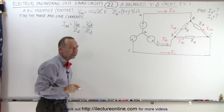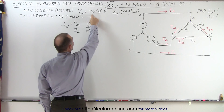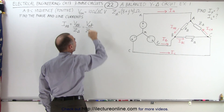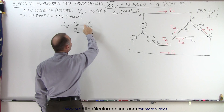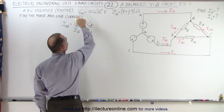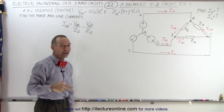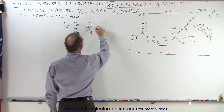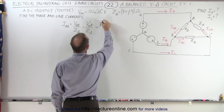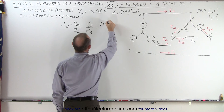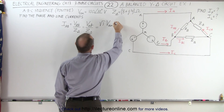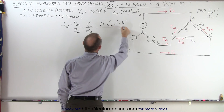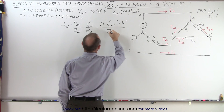Now we're not given the line voltage — we're given the phase voltage — and they differ by a magnitude of the square root of 3. The line voltage equals the square root of 3 times the phase voltage, and it also differs by a phase angle of plus 30 degrees. So this equals the square root of 3 times V AN plus 30 degrees, divided by the impedance.